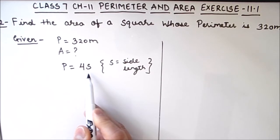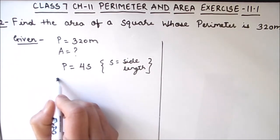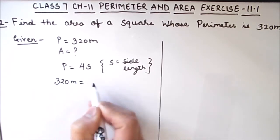We need to find the value of s for finding the area. So let us substitute the values: p equals 320 meters equals 4 times s.